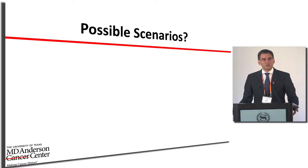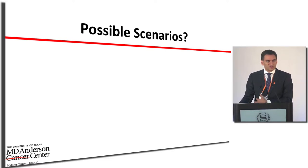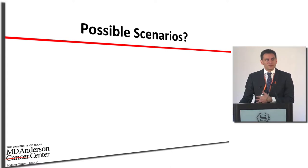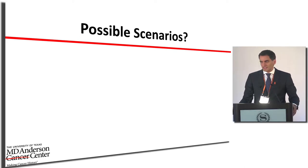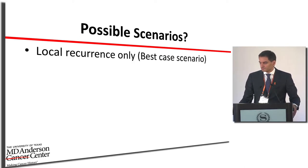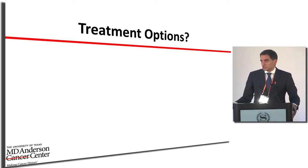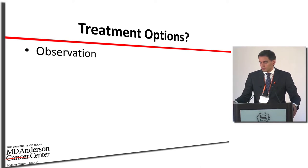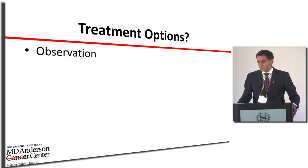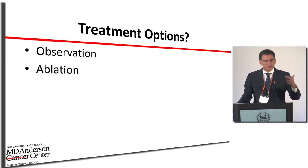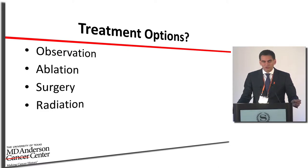There are two possible scenarios: an isolated local recurrence in the area of the initial procedure and nothing else — the best case — or a recurrence in that area plus a metastasis such as in the lung, bone, or liver, which is a less favorable situation. Treatment options include observation, ablation, surgery, radiation, and systemic therapy.